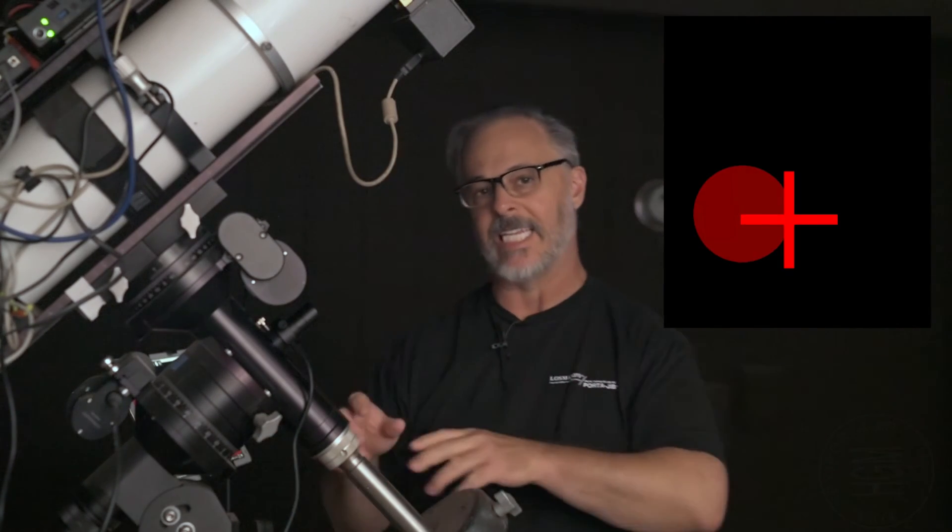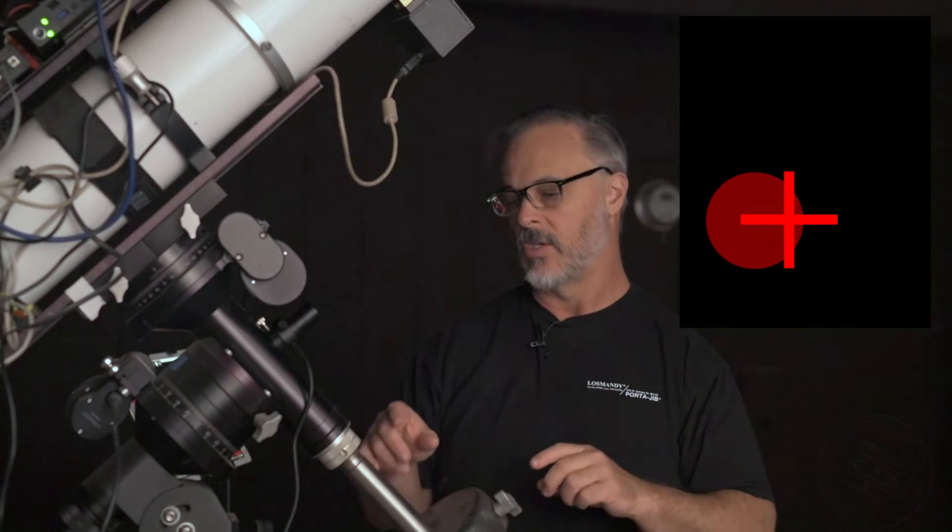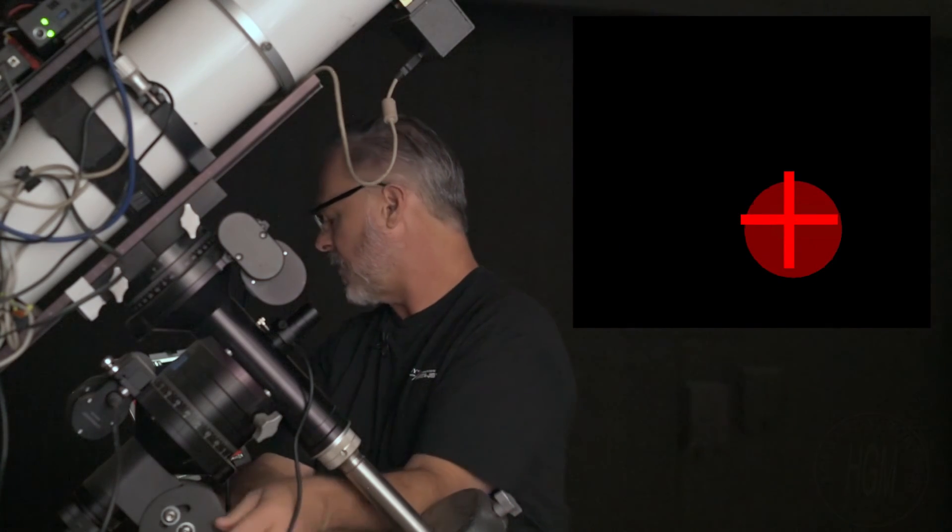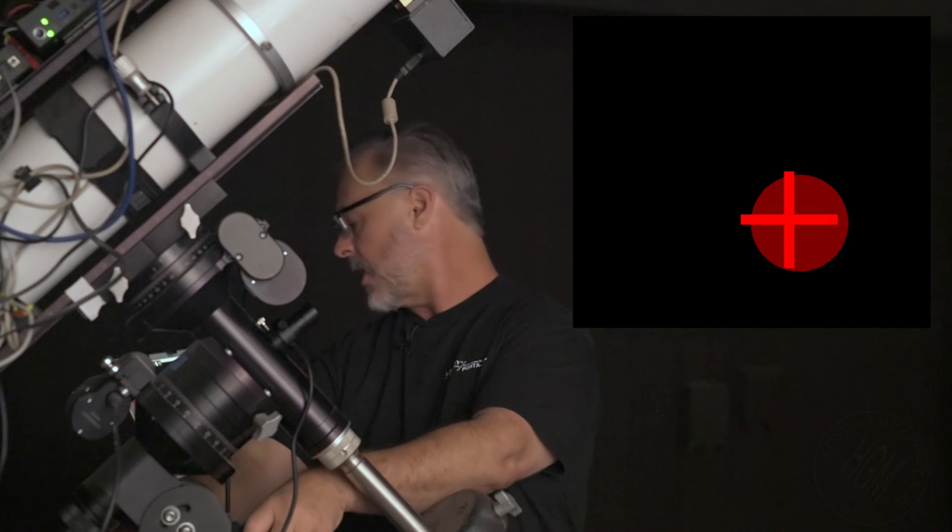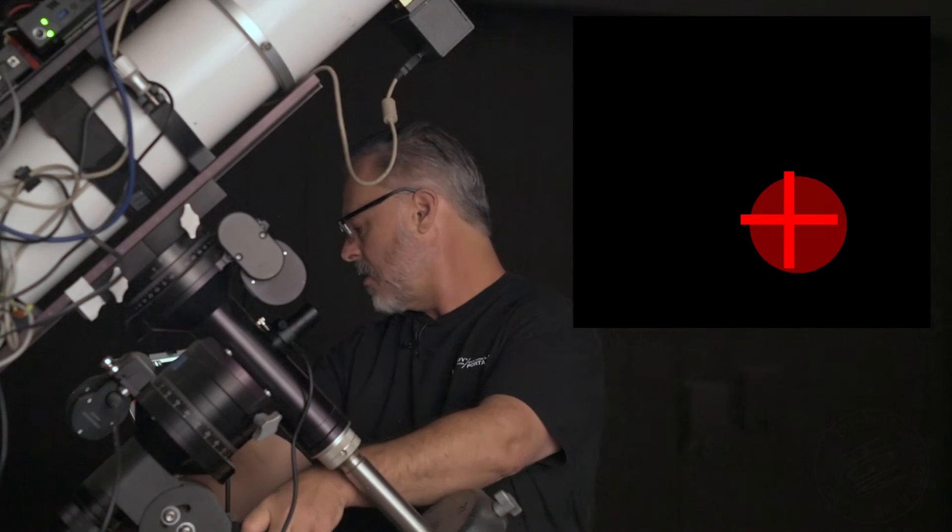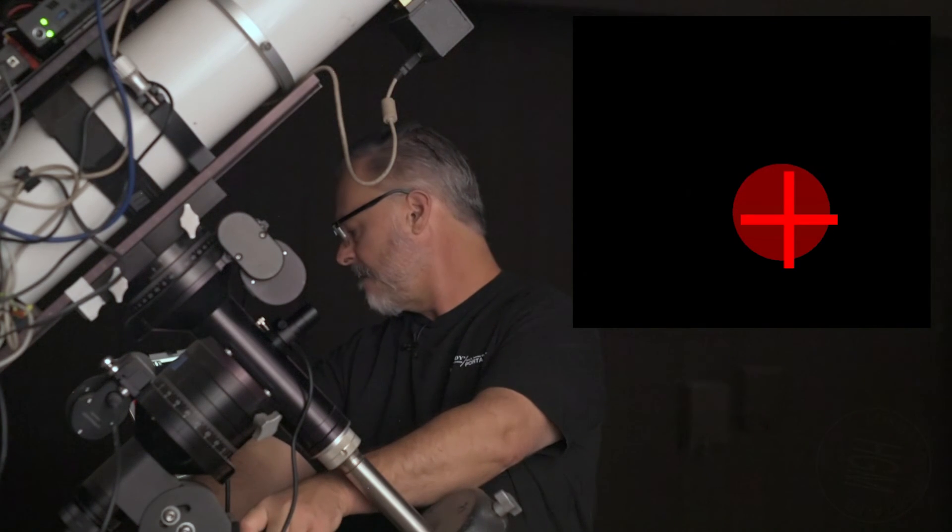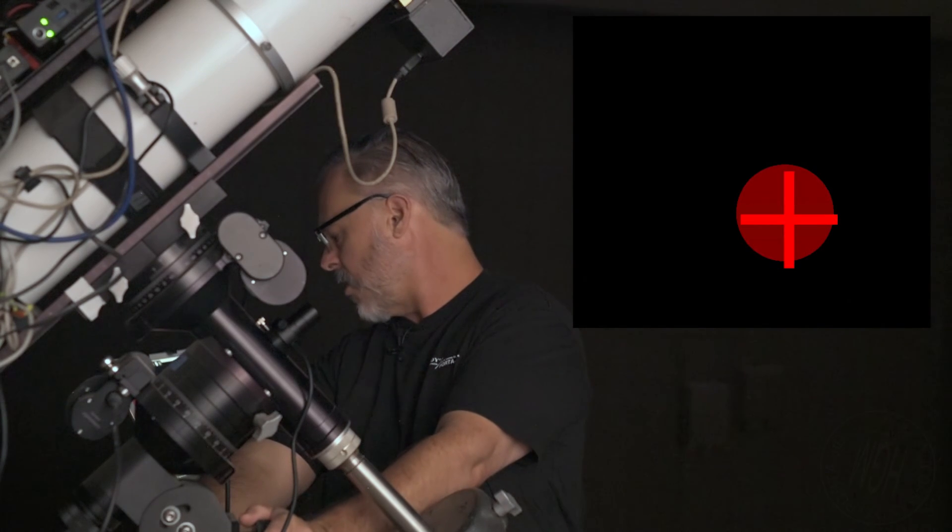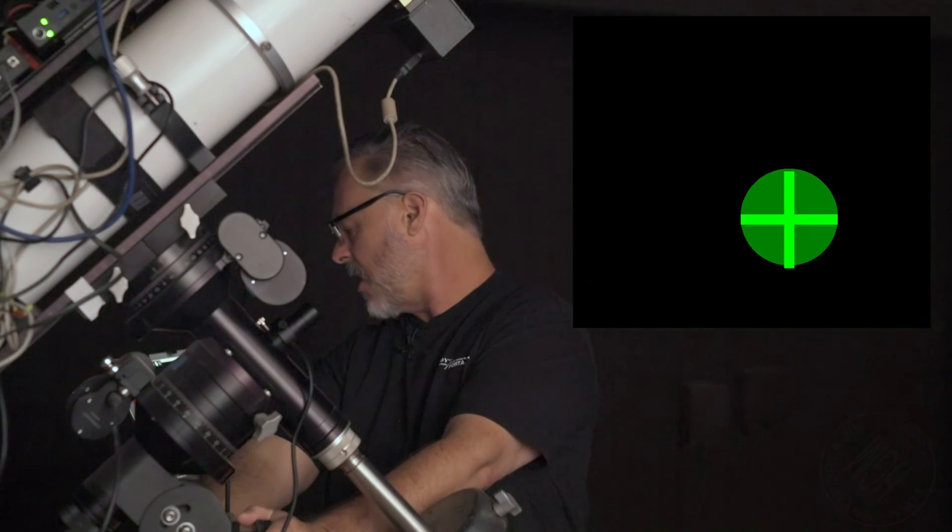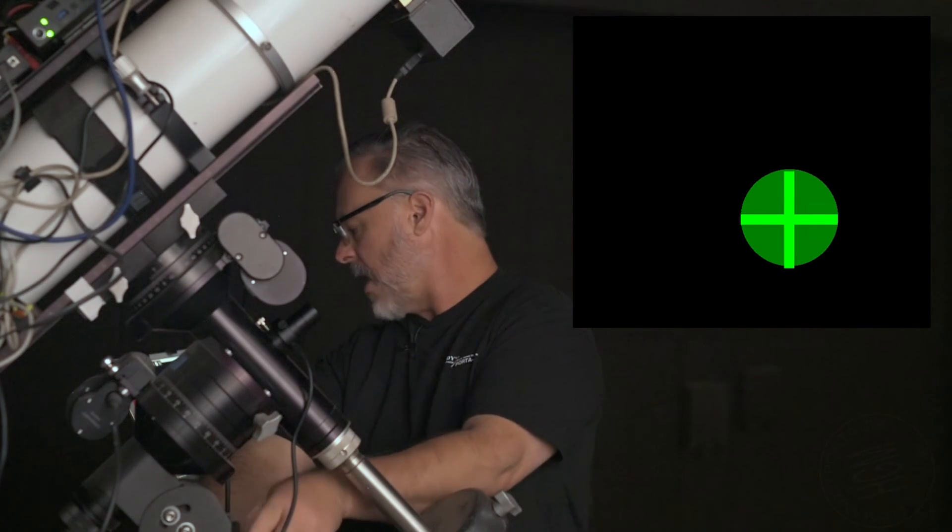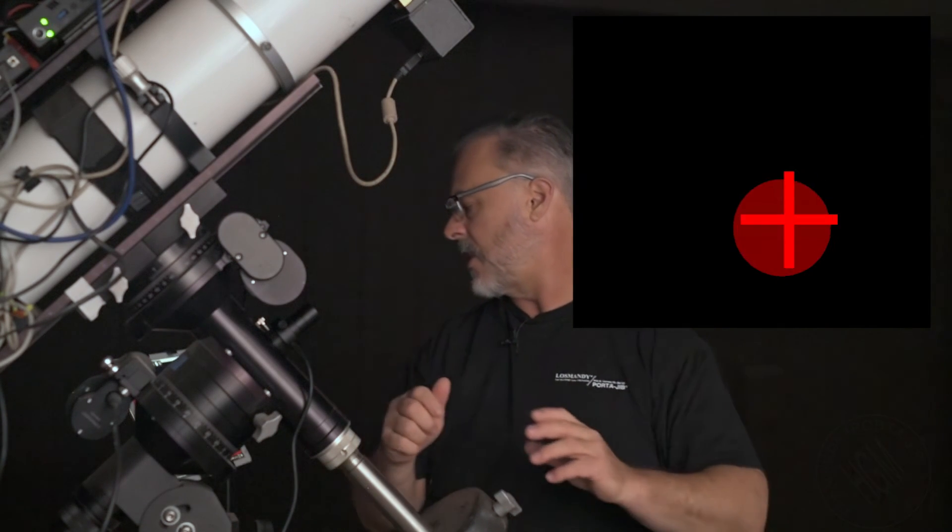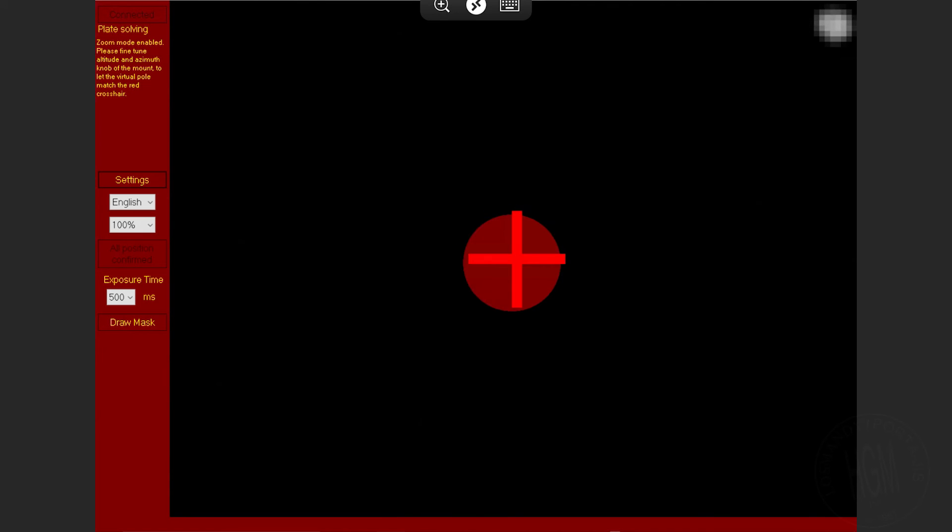Now at this point you want to start tightening down the azimuth and the altitude knobs or bolts if you have them. And you want to do this iteratively. So as we tighten this a little bit more, you're going to see maybe it comes off a little bit in terms of the accuracy, but we're going to continue moving until I'm going to get that pretty close, I hope. Yep, there we go. So it's going to move around a little bit I'm sure, but I'm feeling pretty good that that's about where I need it to be.